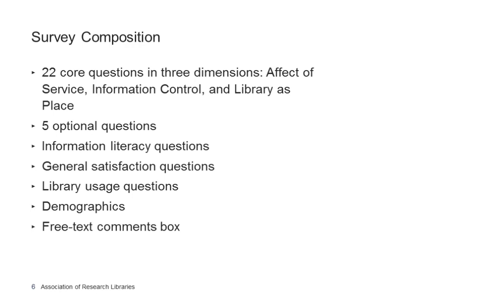The LibQual questionnaire is composed of 22 core questions across the three dimensions: nine affect of service questions, eight information control questions, and five library as place questions. There are also five optional questions, which libraries can select from a pool of about 175 items. These include information literacy questions — such as 'the library helps me distinguish between trustworthy and untrustworthy information' — general satisfaction questions, questions about library usage, demographic items, and a free text comments box.